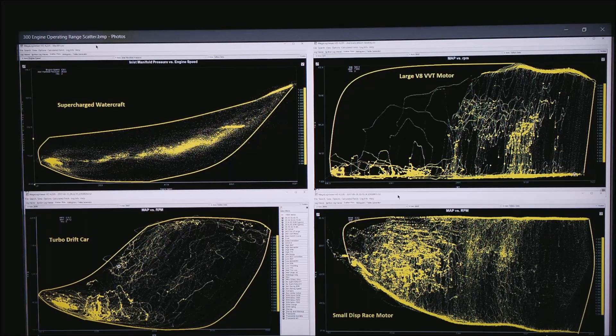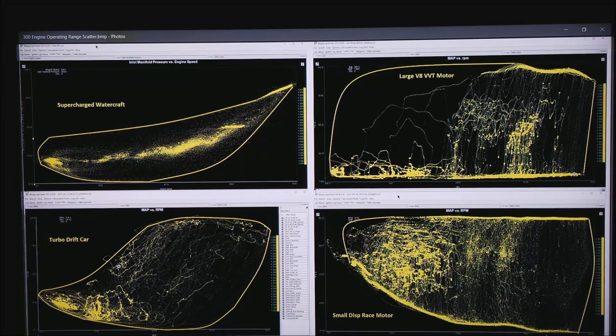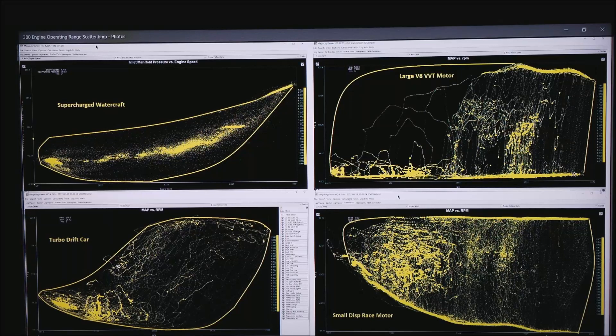Up here on the right is his full power and notice how he can come all the way along the map at very low MAPs in the neighborhood of 12 to 15 kPa.